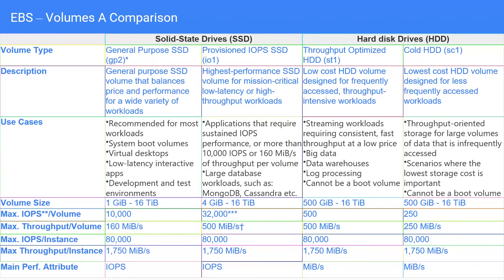To understand use cases: general purpose, as the name suggests, is used for most workloads when you don't have specific needs. It is used for virtual desktops, can be used as a boot volume, for low latency interactive applications, and for development and test environments. For applications that require sustained and high IOPS, you would go for provisioned IOPS. It gives you very high IOPS and you can specify how much IOPS you want. It is used for large database workloads — like NoSQL databases — wherever a high number of transactions are being performed.